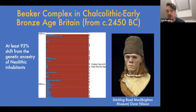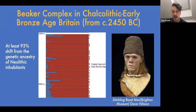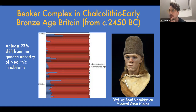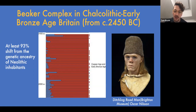In Britain, the arrival of this steppe ancestry is associated with the development of Beaker cultures, defined by particular types of pots found in burials and settlements. Over the period from around 2450 BC to 2000 BC, there was at least a 93% shift in genetic ancestry from the Neolithic inhabitants. Between 2450 and 2000 BC there was likely a period where groups with steppe-related ancestry and groups with British Neolithic ancestry persisted in parallel for a few hundred years before fully merging, after which the Neolithic population left very little legacy in Bronze Age Britain.